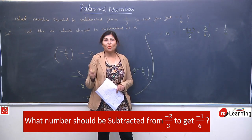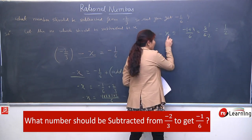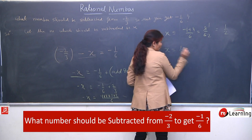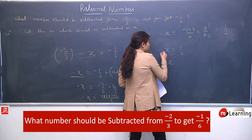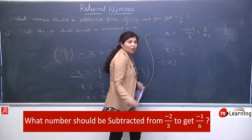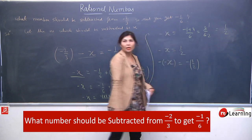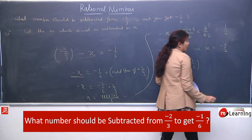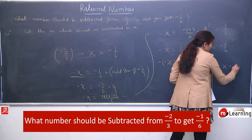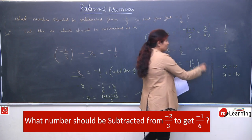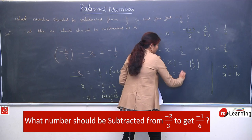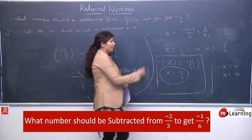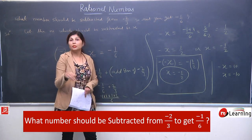Abhi aapka question solve nahi hua, because you have to find x, jabki hume minus x mila. Is minus ko hum shift karenge — mutlabe isse positive banane ke liye kya karenge? Either multiply both sides by minus sign, ya aap directly is minus ko yahan shift kar sakte hain. X equals to minus half. Simple way mein: minus x equal to 10 hai, so x equal to minus 10. Aap 8th standard mein hain, toh aapko full procedure karne ki zarurat nahi. Minus x equal to half, so x equal to minus half.